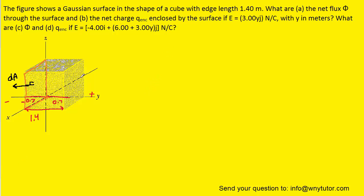We can express the differential area in unit vector notation as dA-vector equals dA multiplied by negative j-hat, because it points toward the negative y-axis.